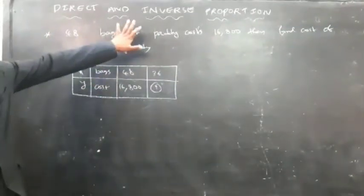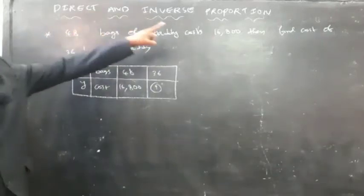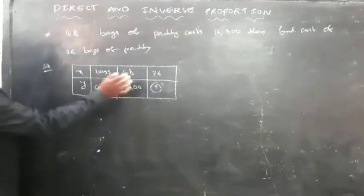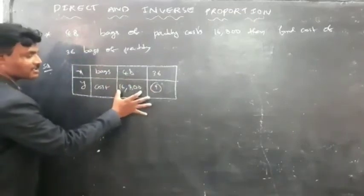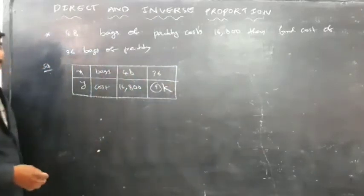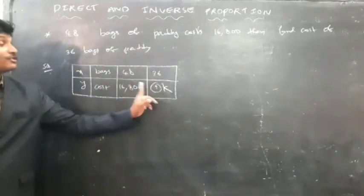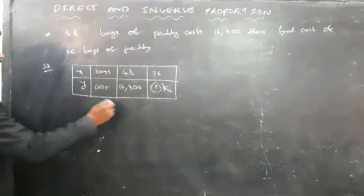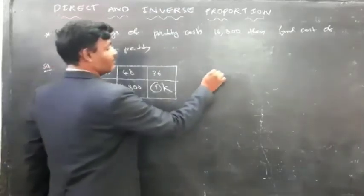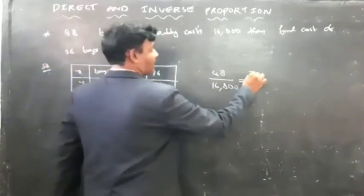Next problem: 48 bags of padding cost 16,800 rupees. Find the cost of 36 bags. The cost of 48 bags is 16,800 rupees. Let the cost of 36 bags be k. Here the number of bags is decreased, so cost also decreases. Both are in direct proportion. We write x1 by y1 is equal to x2 by y2. x1 is 48, y1 is 16,800, x2 is 36, y2 is k.